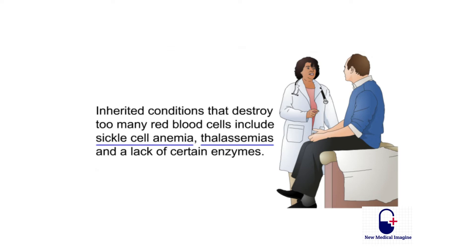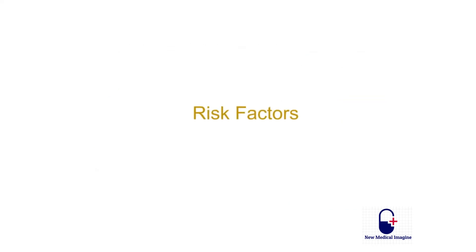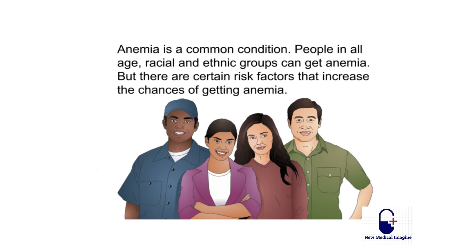Inherited conditions that destroy too many red blood cells include sickle cell anemia, thalassemias, and a lack of certain enzymes. Anemia is a common condition — people in all age, racial, and ethnic groups can get it — but certain risk factors increase the chances of developing anemia.